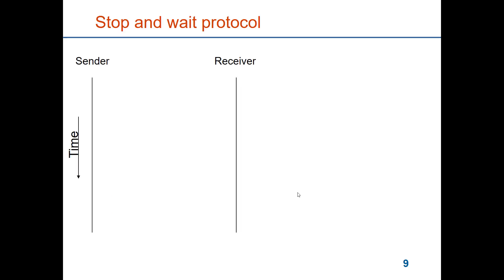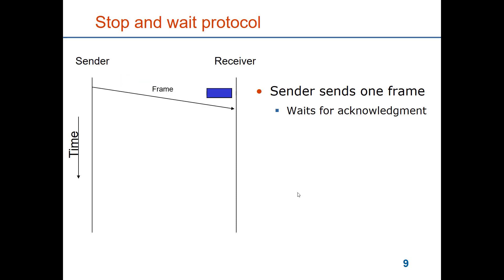Stop-and-wait protocol. I will show the workings of the protocol by two time axes — one for the sender and one for the receiver. Time is progressing from top to bottom. Here is an illustration of a sender sending one frame to the receiver. You see that the frame is sent and sometime later it has been received. If there was no flow control, the sender could continue to send the next frame and the next frame and so on.